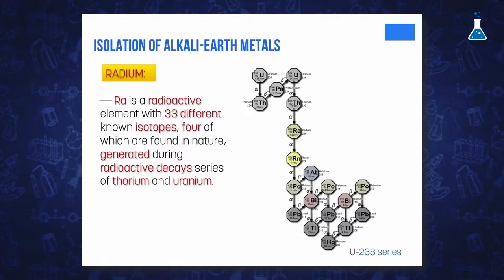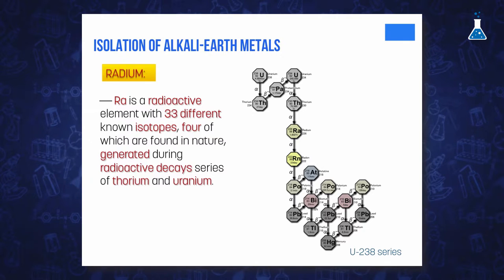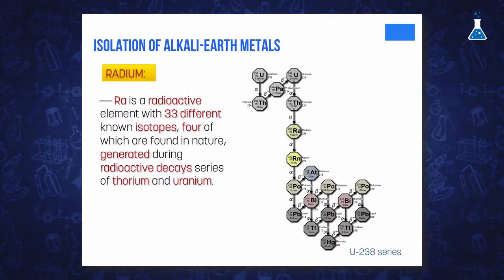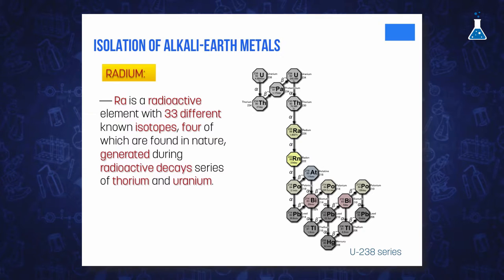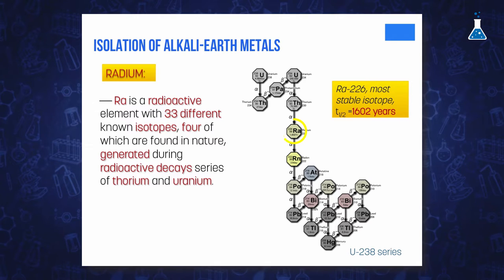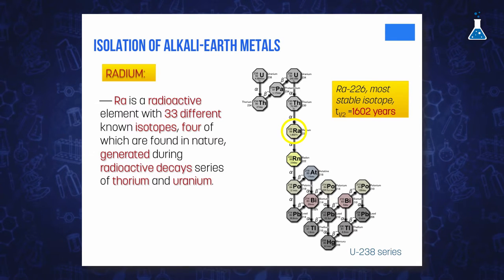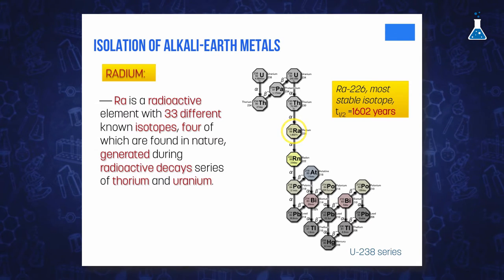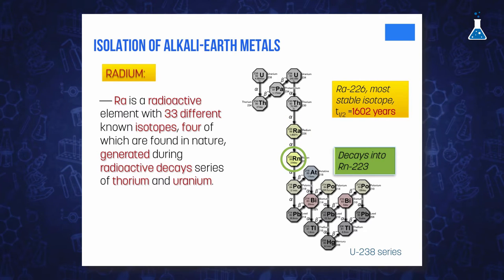Radium is a radioactive element with 33 different known isotopes, four of which are found in nature, generated by the radioactive decay series of thorium and uranium. It is found in trace amounts in uranium ores — for example, one ton of the uranium ore pitchblende yields one-seventh of a gram of radium. Its most stable isotope is radium-226, which has a half-life of 1602 years and finally decays into radon gas.